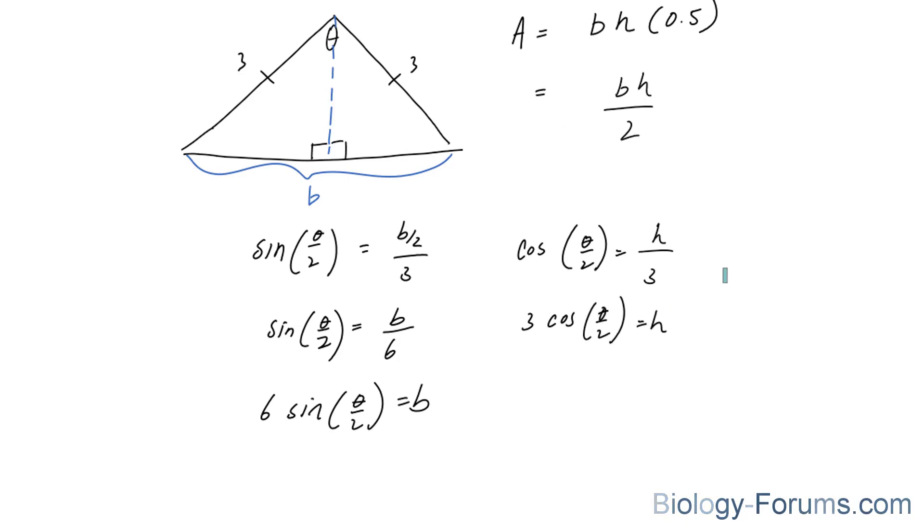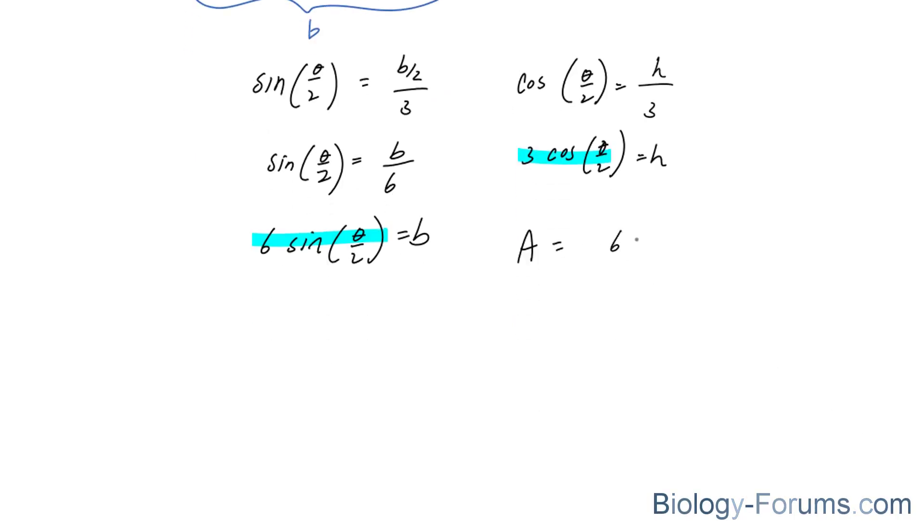So we are going to replace b and h with the following. And the formula becomes area is equal to six sine theta over two times three cosine theta over two, all divided by two.